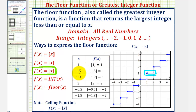When x is one point five, we're looking for the largest integer that is less than or equal to one point five, which would be one. So the point would be one point five comma one. At x equals one point nine, the largest integer less than or equal to one point nine is again one. But as soon as x reaches two, the largest integer less than or equal to two is two, since two is an integer — so the function value jumps to positive two, shown as a closed point up at two.